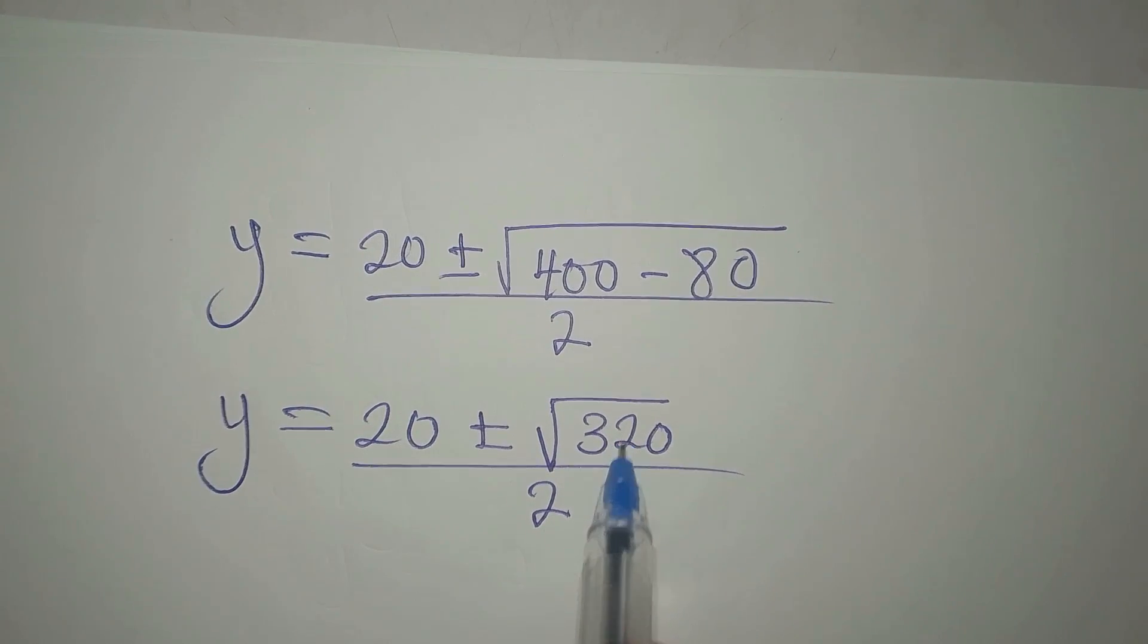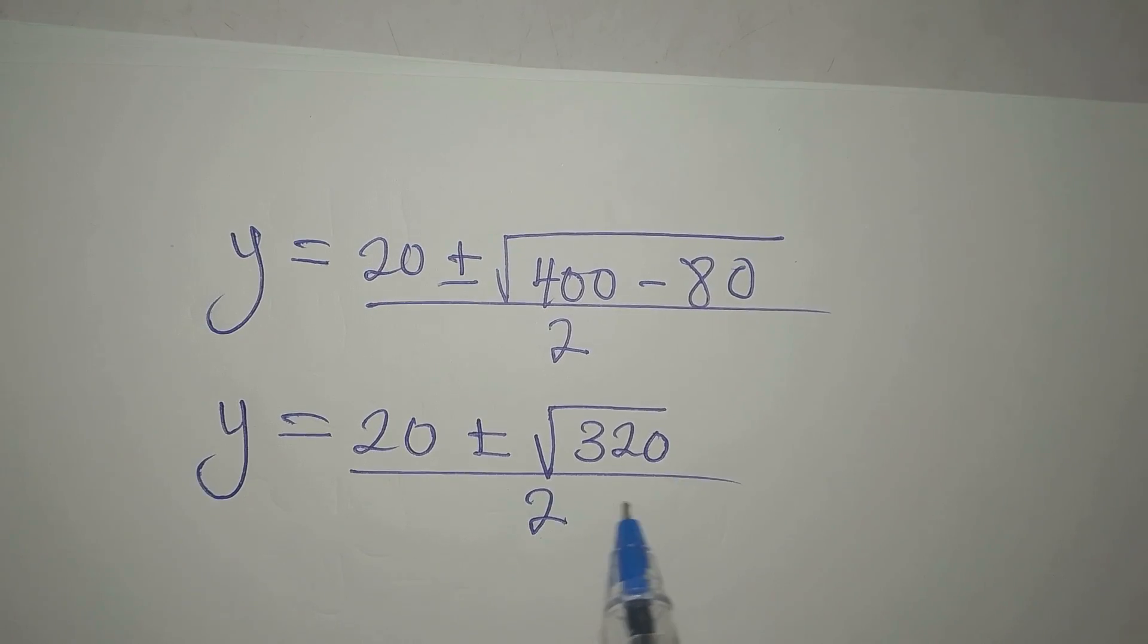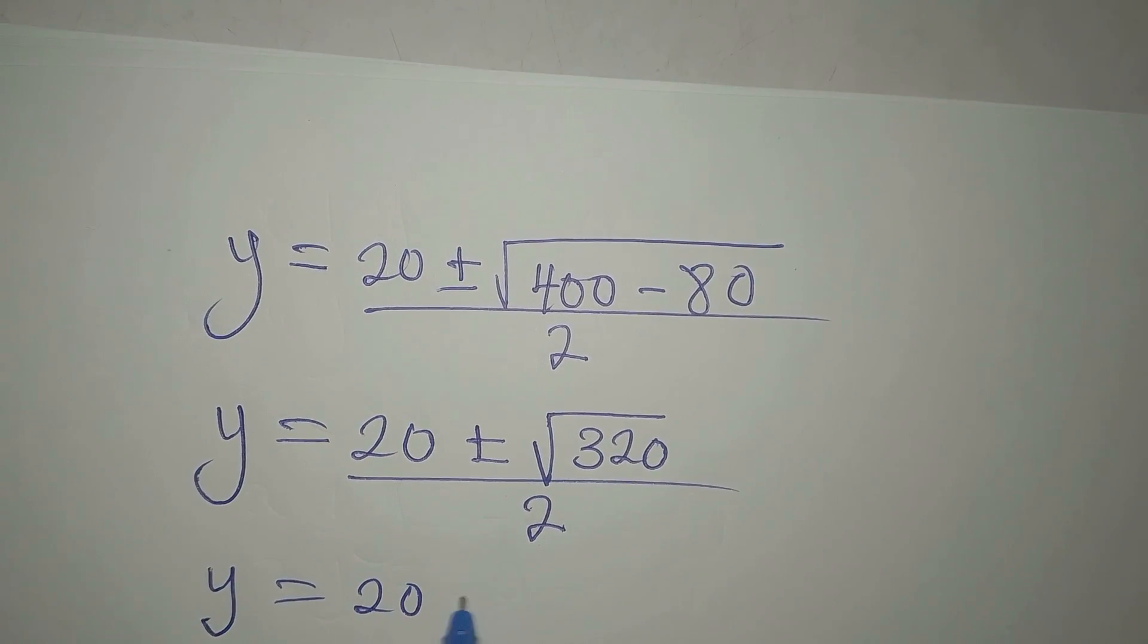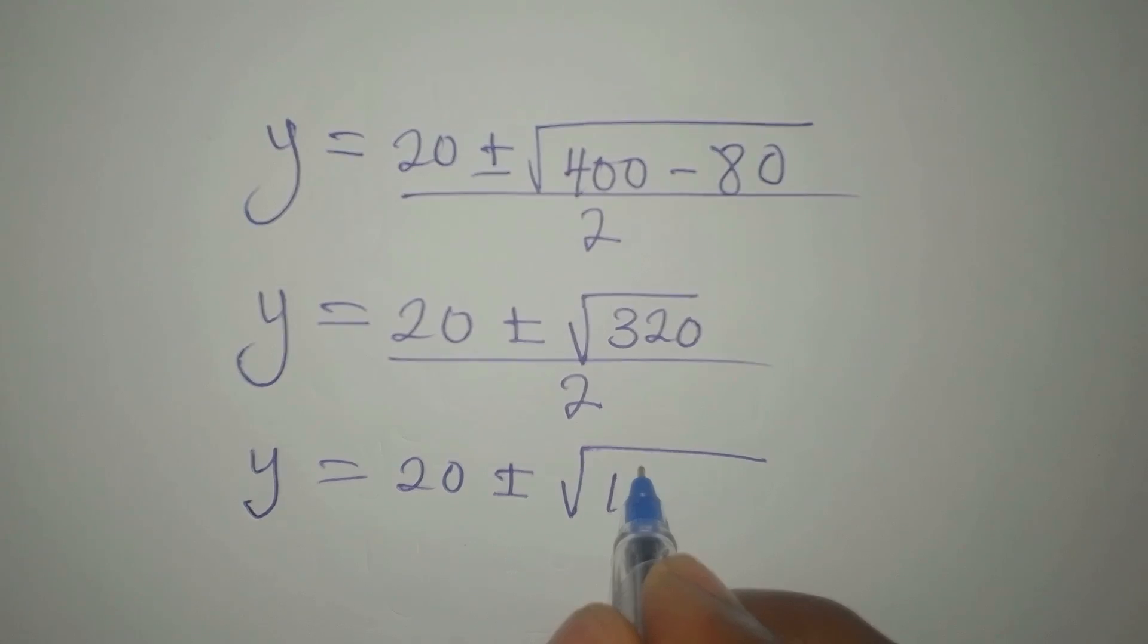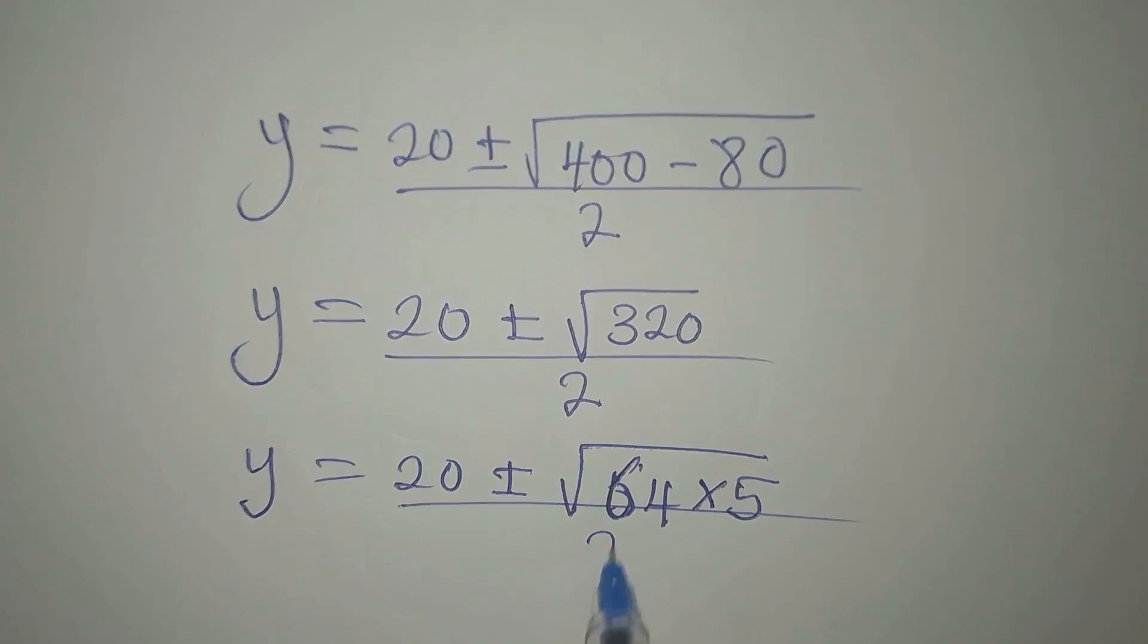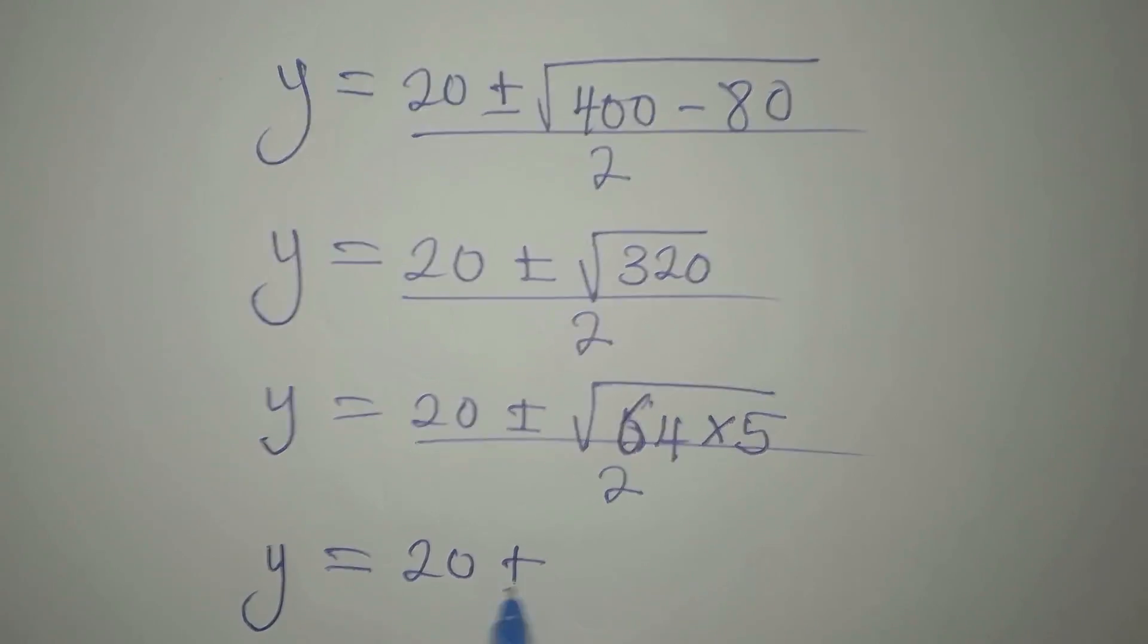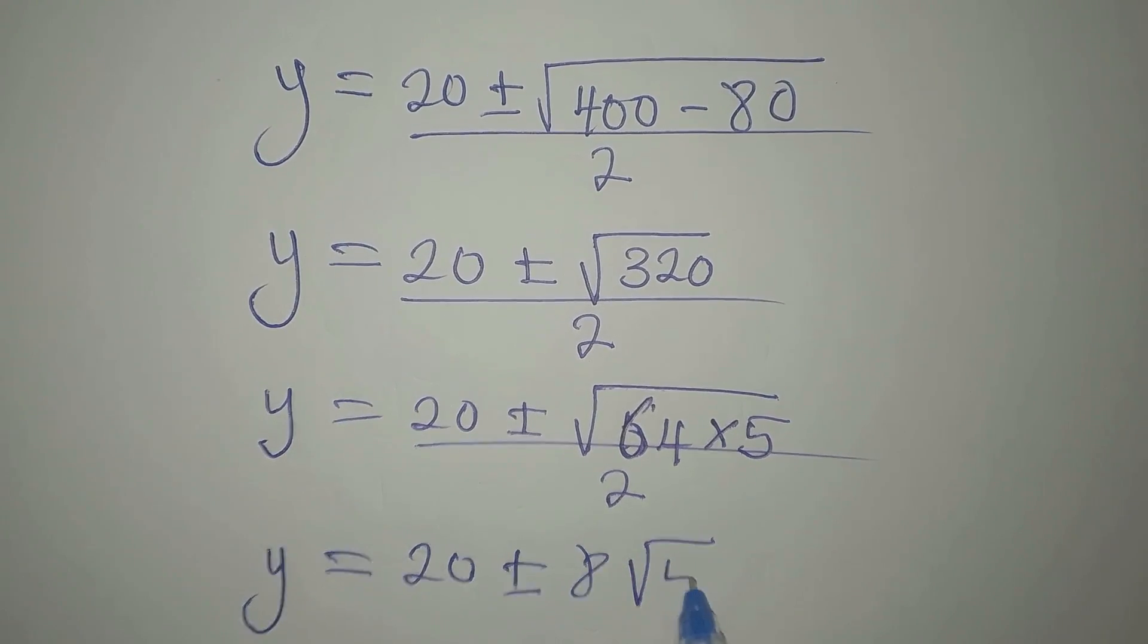There are a couple of perfect squares as factors of 320. One is a perfect square there, 4 is a perfect square there, even 16 is there. Let's see the highest perfect square there. y will be 20 ± √(64 × 5), because 64 × 5 is 320 and 5 is not a perfect square. We now have y to be 20 ± √64 is 8, then we multiply by √5, so we have 8√5.